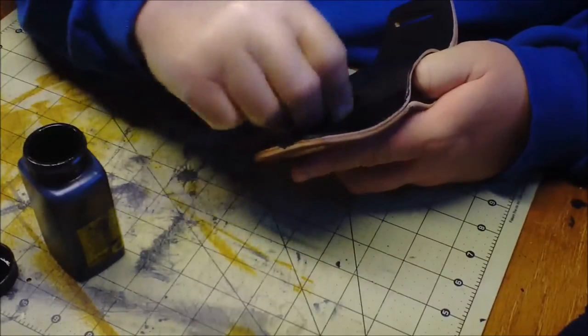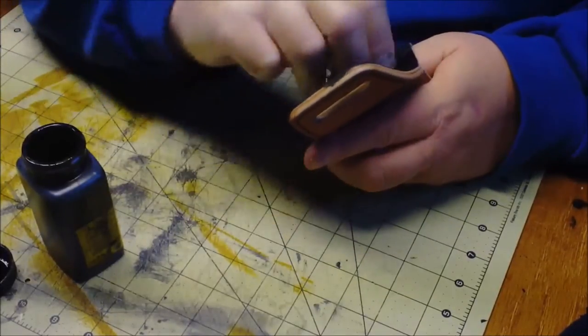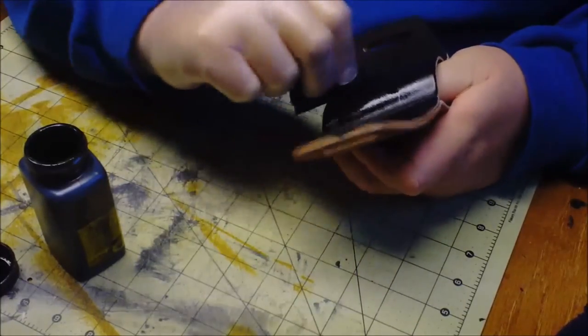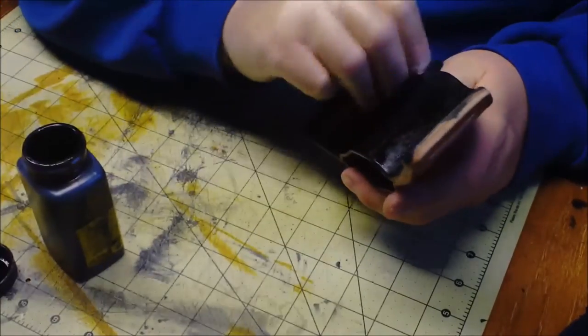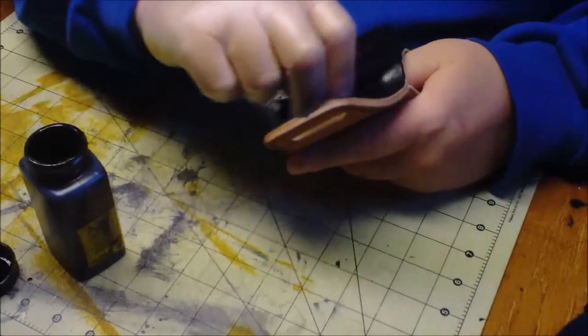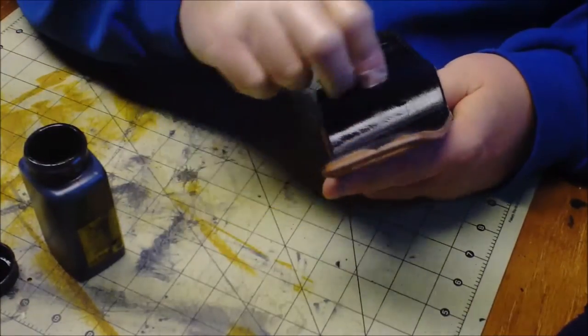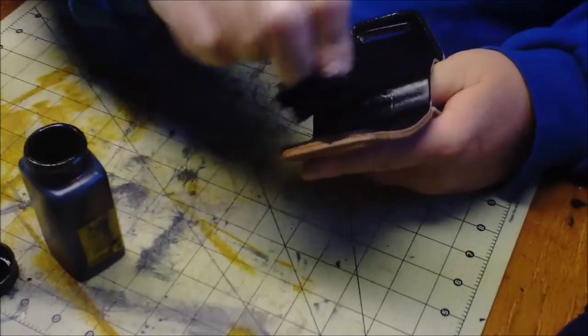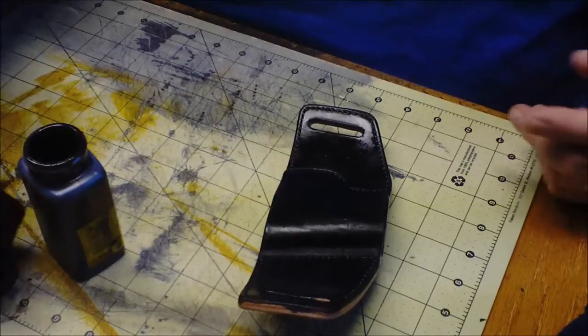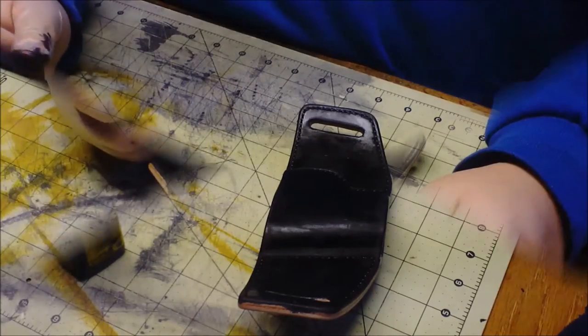I just kind of like this method because it lets me work the dye into the leather and it seems to penetrate a little bit better. Now being that this is an alcohol based dye, it'll flash off pretty quick and then we can give it a quick buff and put another coat on. So let that sit, won't take but 10 or 15 minutes to flash off and we'll get that second coat on.